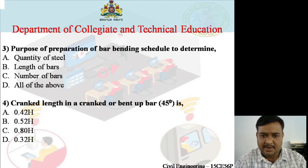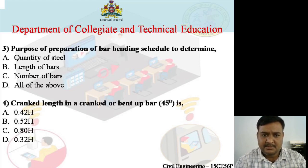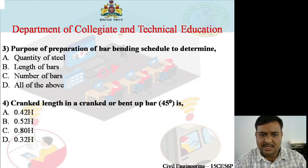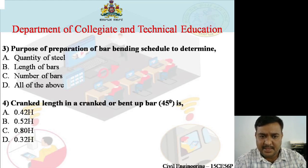MCQ 3: The purpose of preparation of a bar bending schedule is to determine — quantity of steel, length of bars, number of bars, or all of the above. The answer is D: all of the above. MCQ 4: The crank length in a cranked/bent-up bar at 45° is — 0.42H, 0.52H, 0.8H, or 0.32H. The right answer is A: 0.42H.